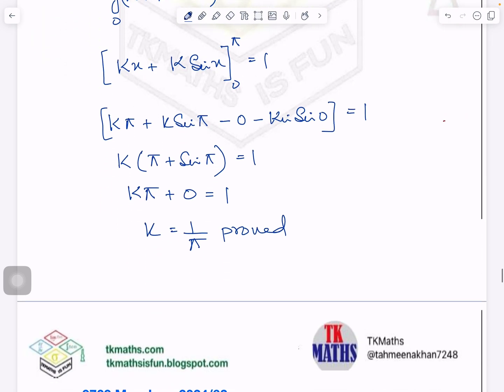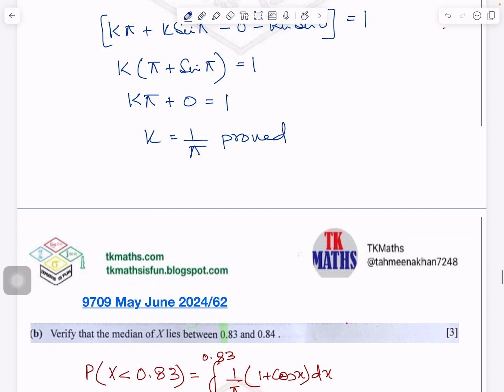Now, second part. You have to verify that the median of x lies between 0.83 and 0.84. Now let me try to explain to you the meaning of the question. Suppose this is the line. When we have to find out the median value, on either side of it, the area is 50-50%.